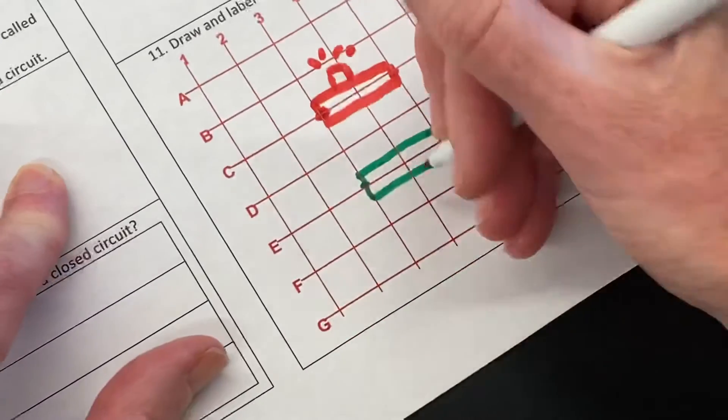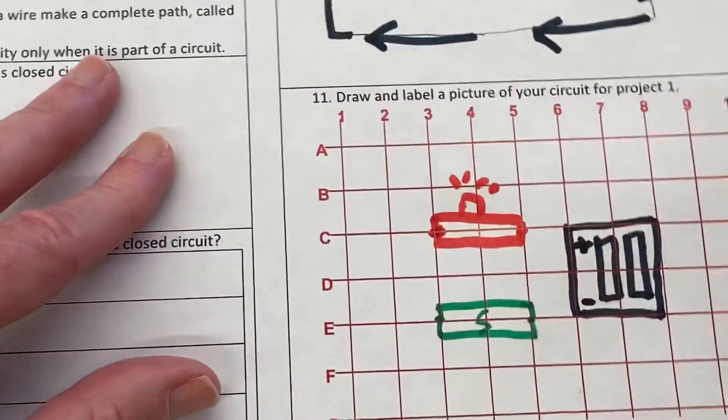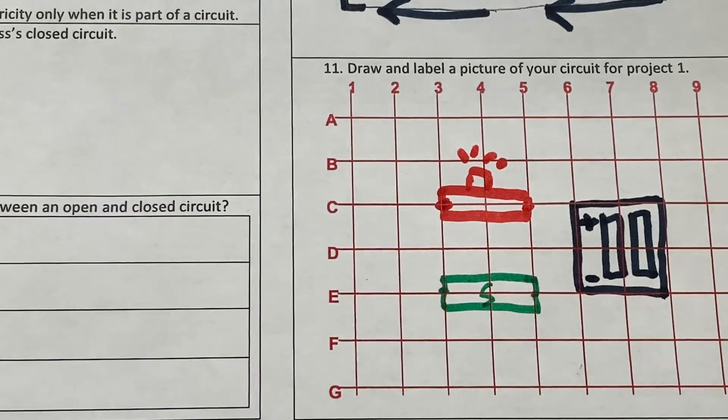I'm going to label it 's' for switch, and then I have a three-connector piece that goes from c-d-e on number two. So we've got this piece.